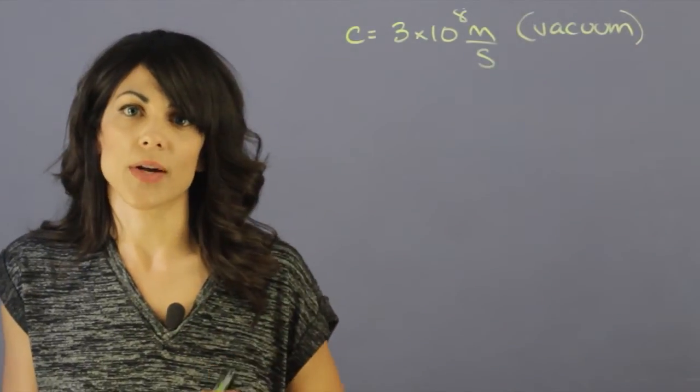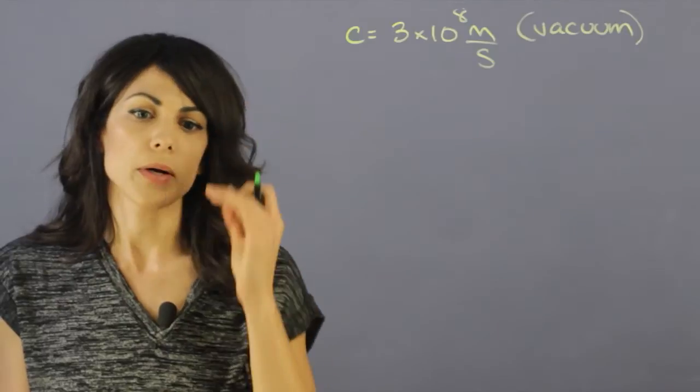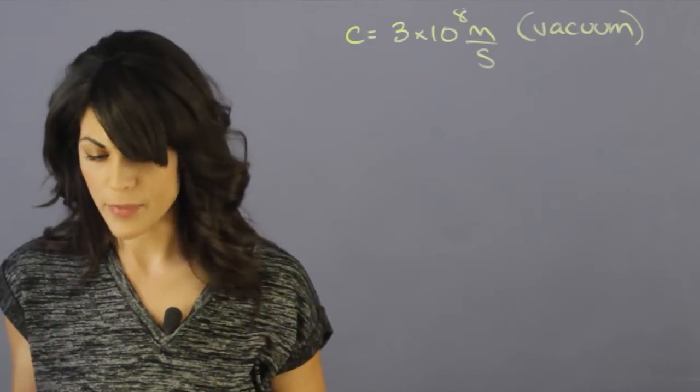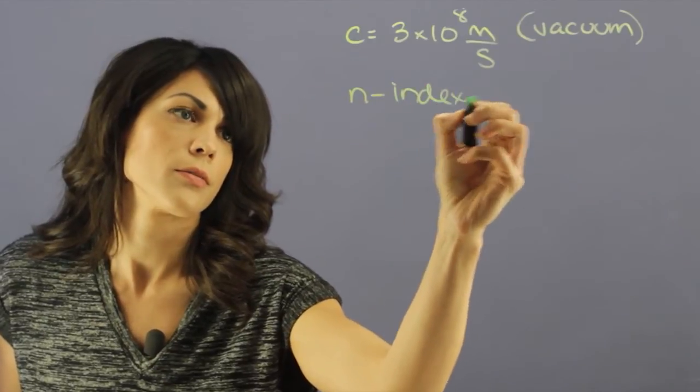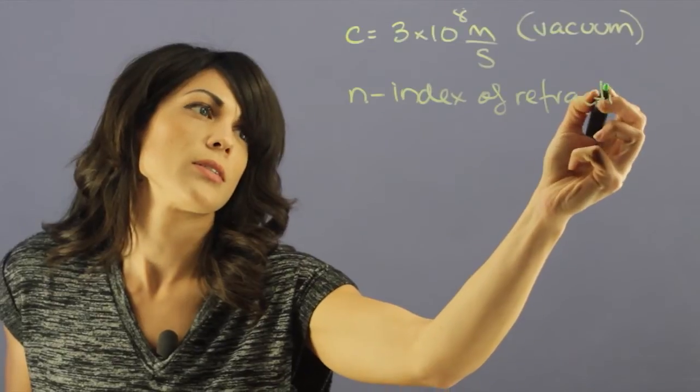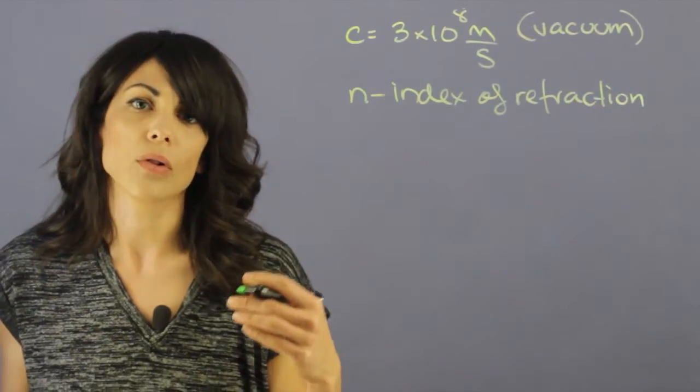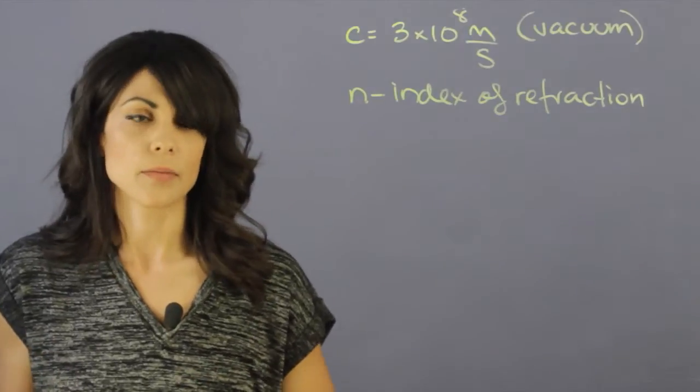Now what happens when light is traveling through a medium? Here we need to look at the index of refraction. n is the index of refraction, and it's a measurement of how good a material is at deflecting light.